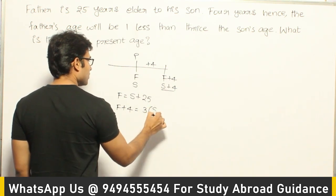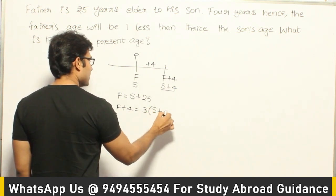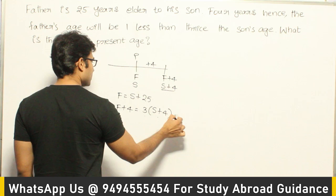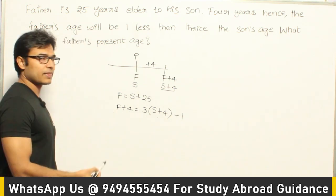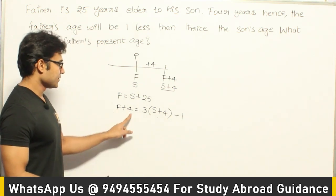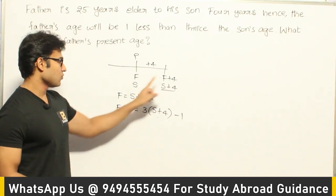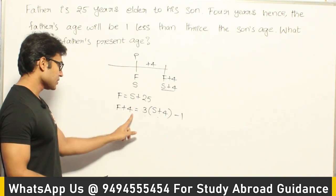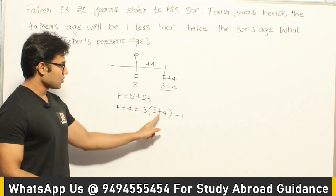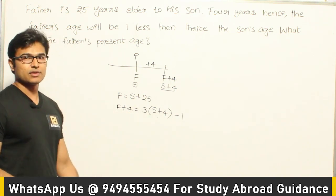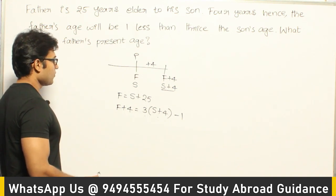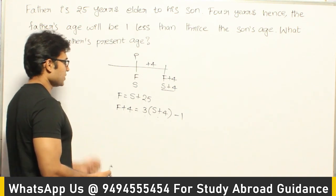So S plus 4 — one less than thrice of son's age means 3 times (S plus 4) minus 1. So 4 years hence, which means after 4 years, father's age will be one less than thrice of son's age. That is how we got the second equation.